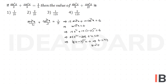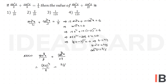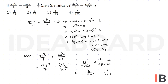So sin squared x equals 2 by 5, which implies cos squared x equals 3 by 5. Now sin to the power of 8x by 8 plus cos to the power of 8x by 27 equals (2 by 5) to the power of 4 by 8 plus (3 by 5) to the power of 4 by 27, which equals 1 by 125. The correct answer is the third option.